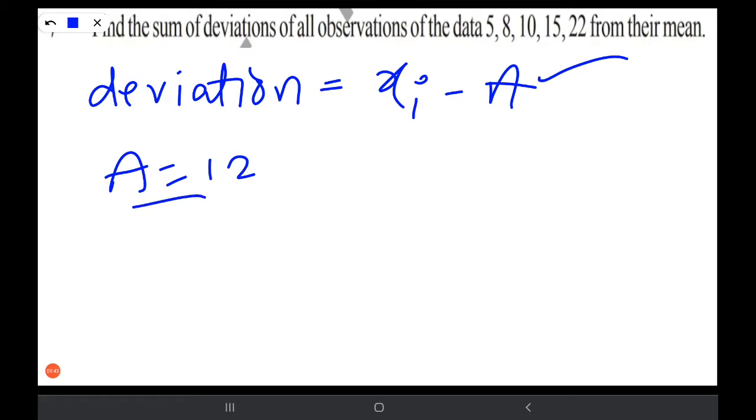So we have to find sum of deviations. Deviation is XI minus A, where A is the assumed mean. So here we take A as 12, the mean we just got. So what it becomes?